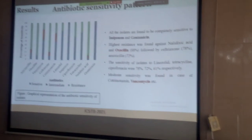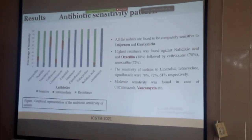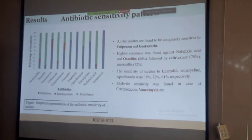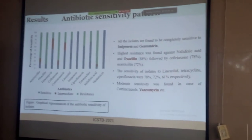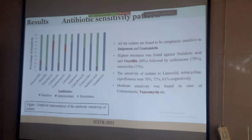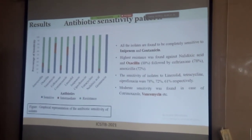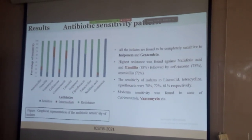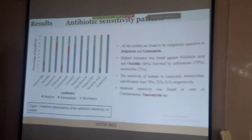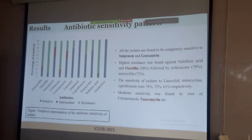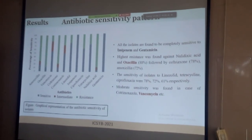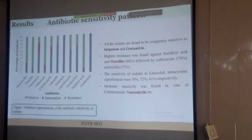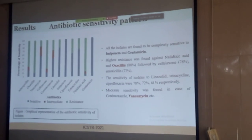We determined the antibiotic sensitivity pattern using the widely used Kirby-Bauer antibiotic disc diffusion method. For phenotypic detection of MRSA, an oxacillin disc is used; nowadays cefoxitin is also used. We found that 88% of isolates are resistant to oxacillin, so we can deduce that the prevalence of MRSA in those samples is 88%. Interestingly, vancomycin is used to treat MRSA nowadays, and we found moderate sensitivity of isolates to vancomycin. Sensitivity to linezolid, tetracycline, and ciprofloxacin are also noted. Importantly, all isolates were found sensitive to imipenem and gentamicin, which are still working to treat staphylococcal infections.